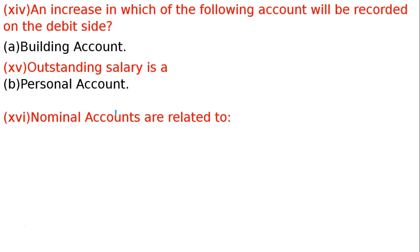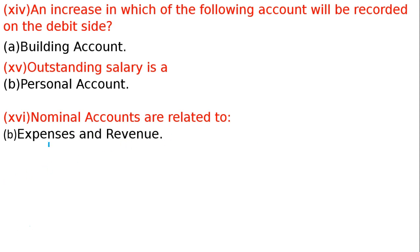Last question: Nominal accounts are related to what? We know them by name only — unka koi akriti ya physical existence nahin hota, no physical appearance. Jaise rent pay kar rahe hain — rent ka koi physical existence hai kya? Rent ko hum dekh nahin sakte. So nominal accounts are expenses and revenue accounts — jaise discount received is a revenue account and discount allowed is an expense account, commission received is revenue, commission paid is expense. Nominal accounts are only related to income and expenses.